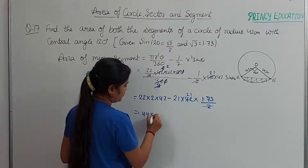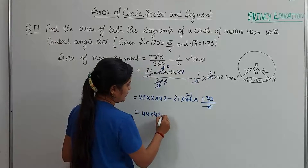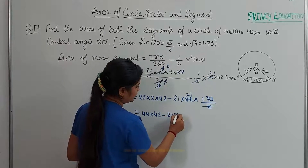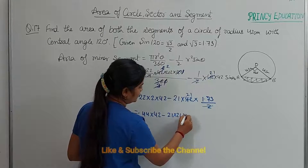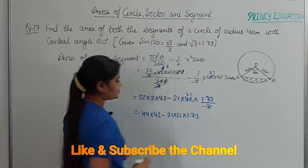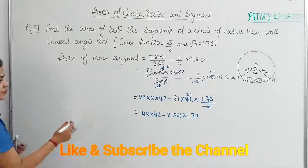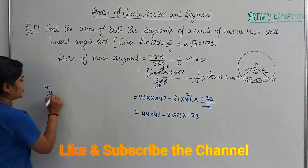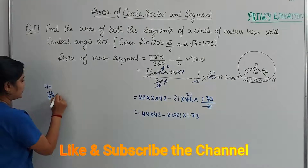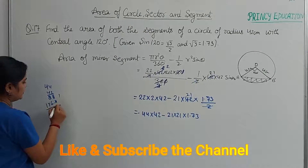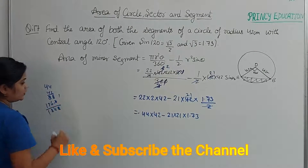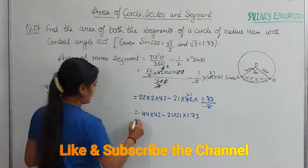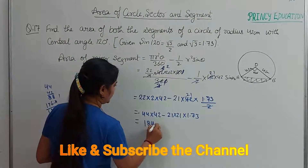Simplifying: 44 × 42 minus 21 × 21 × 1.73. Let's multiply 44 × 42. 4×8=32, 4×8=32, 4×16=64 — the result is 1848.